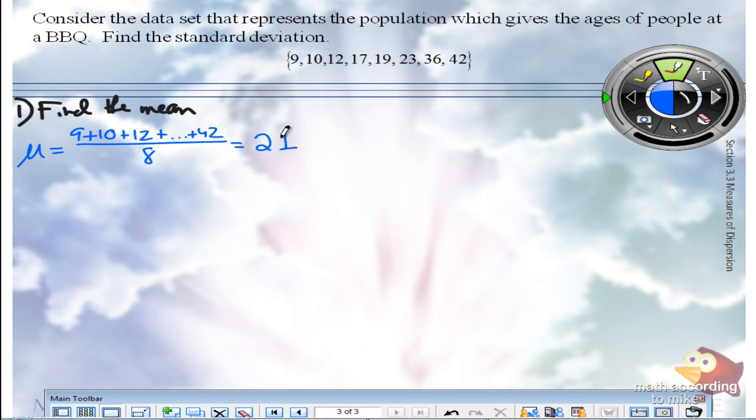So now when we find the standard deviation, it's going to tell us how far from 21, on average, are the other data elements. So a small number means they're relatively close. Larger number means they're really spread out.